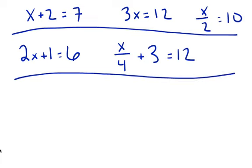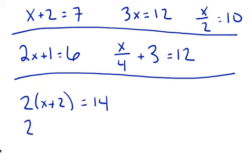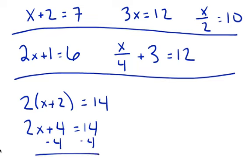We also had another type we did the last couple of days, which was when you had the distributive property and you had to use it to simplify, which gave you a two-step equation. You solved it — you did your minus 4, and ended up with 2x equals 10, giving us a one-step equation. So we started with one-step, moved to two-step, and then moved on to the distributive property.